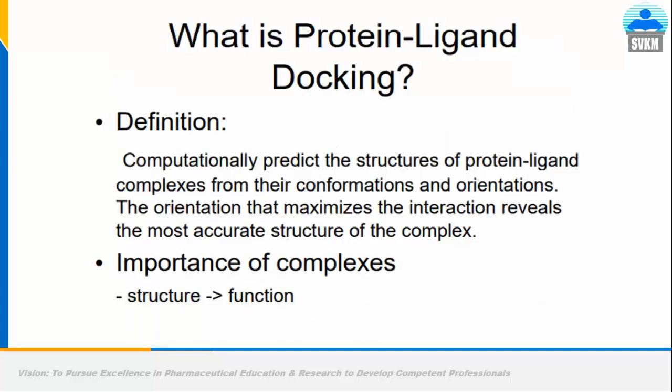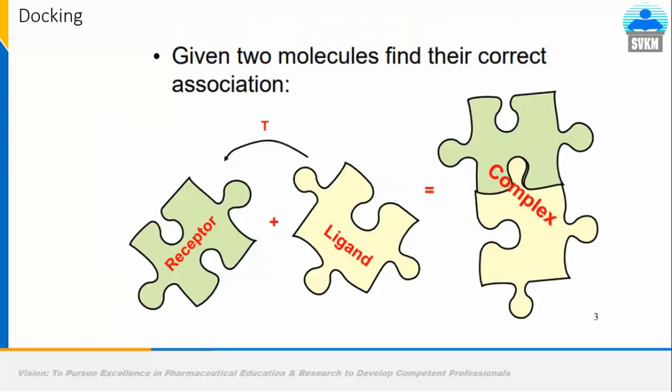Protein-ligand docking is an interaction study of a ligand with a protein. First, we identify the receptor by visualizing the disease parameters. Those receptors are cleansed using tools like PyMOL and Discovery Studio Visualizer. The ligands and receptor are then converted into a single format and treated for molecular docking. The docking study leads to the formation of a complex with hydrogen bond interactions at the active sites with amino acids. Based on the lock and key model, the best key for the lock is selected as the best molecule.